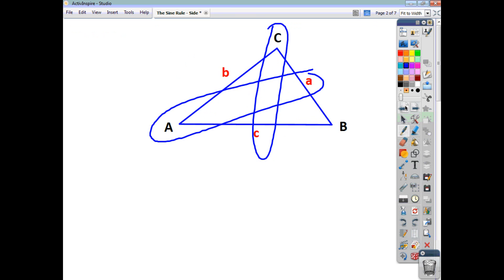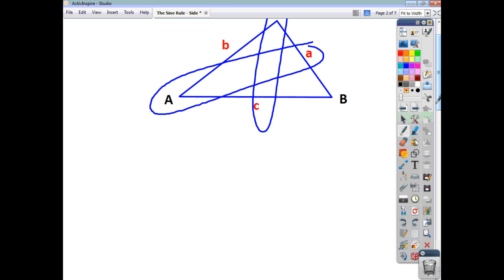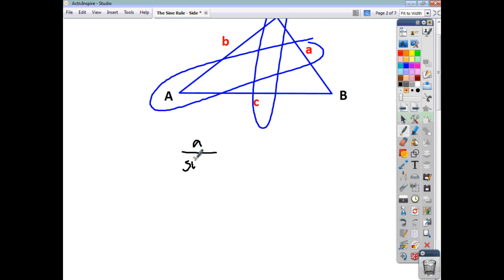So, just to remind you, the sine rule is, of course, a over sine A equals b over sine B equals c over sine C. So these three ratios will always be equal when you're talking about a triangle, where the capital letters are the angles and the lowercase letters are your sides. And at National Five level, this will appear in your formula sheet, so you just need to know what it means.